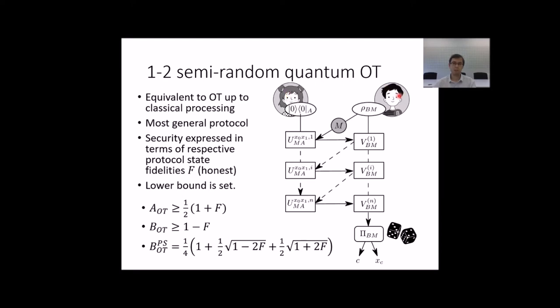Alice and Bob have their own quantum states and they communicate with another state M. They sequentially perform unitary operations U and V on their system and system M. Finally, Bob measures and he obtains bits C and value XC. Cheating probabilities are related to respective fidelity F of the states in the protocol when it is executed honestly.